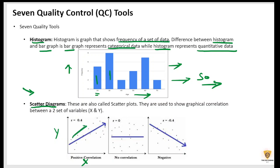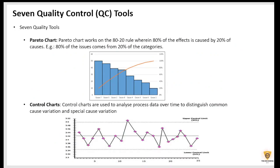So, this is the positive correlation, this is the no correlation, and this is the negative correlation. Right? Let's move on to the next tool.